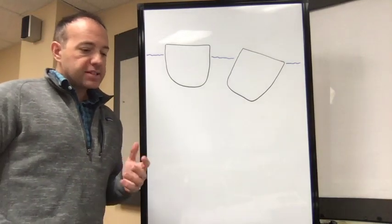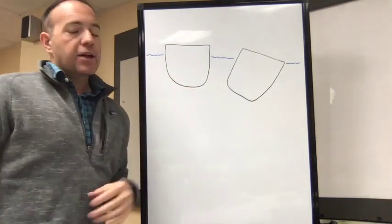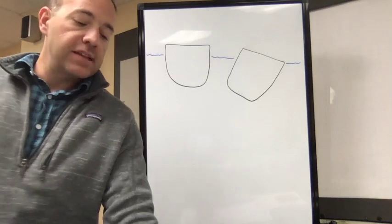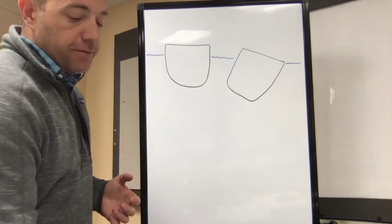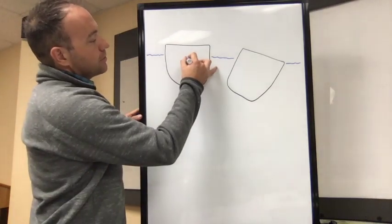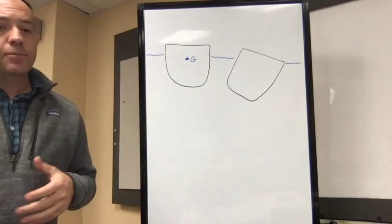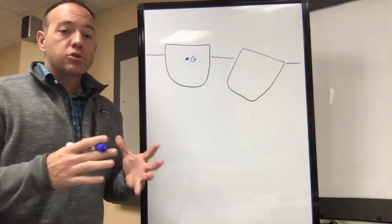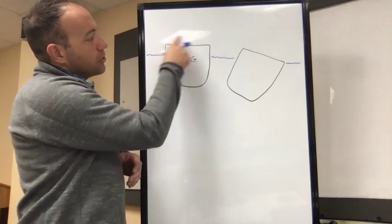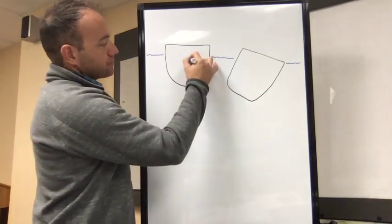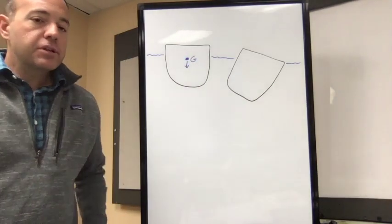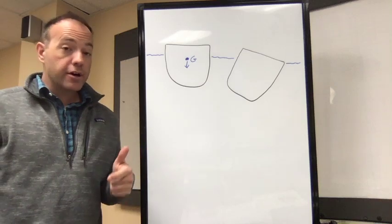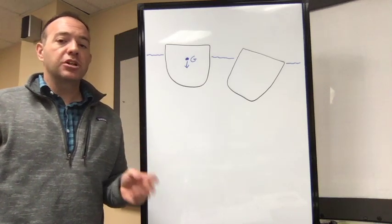Consider two vessels — one floating upright in water and one inclined, maybe due to a wave or some other reason. There are a couple of key points regarding basic stability. The first is the concept of the center of gravity, always labeled G in stability diagrams. The center of gravity is the center of the average weight on the vessel — all the tanks, water, cargo — where it all averages out. It always acts straight downward and doesn't really move unless you do something to your ship, like change the fuel configuration, take on water, or add or remove cargo.